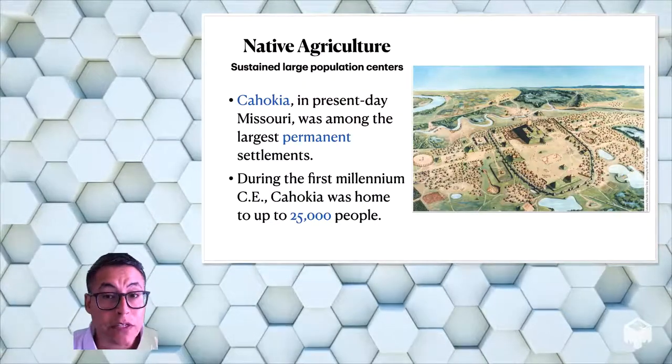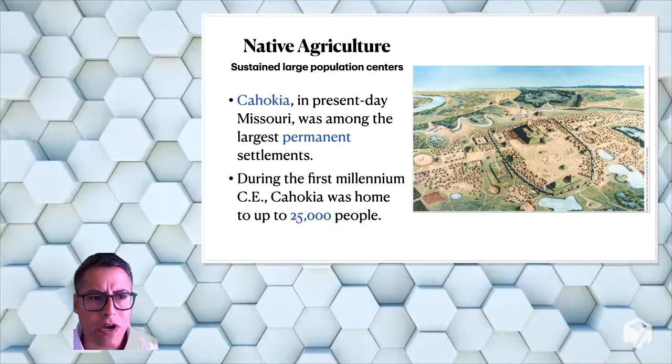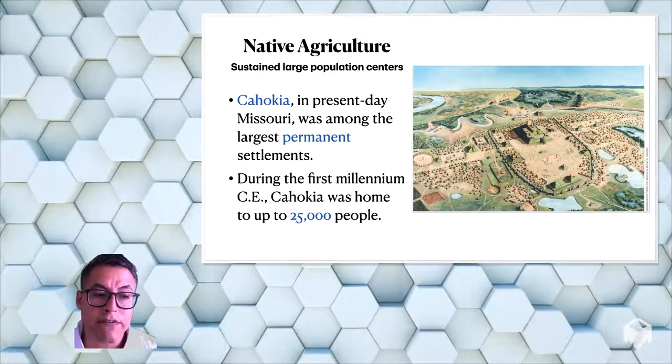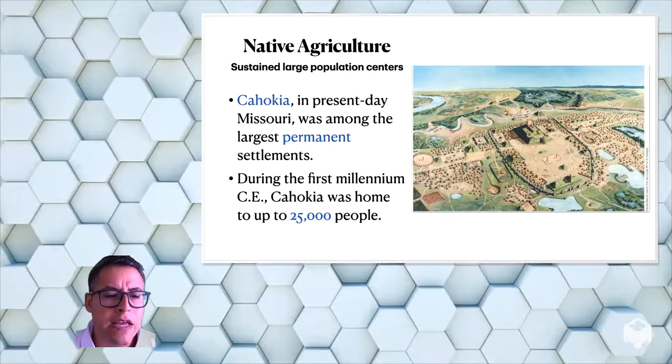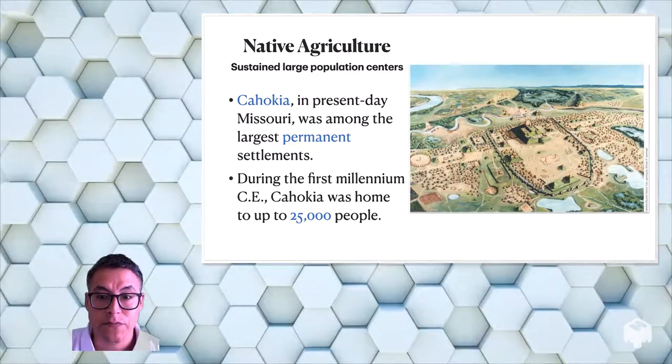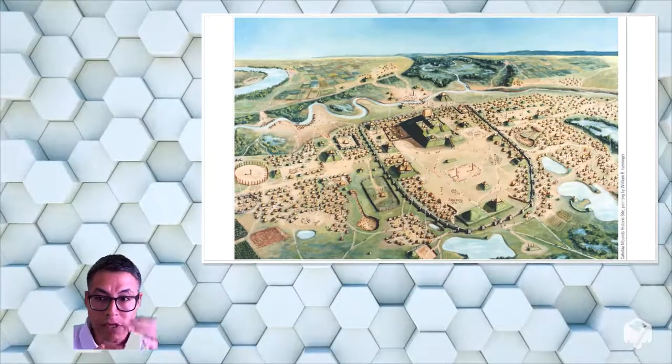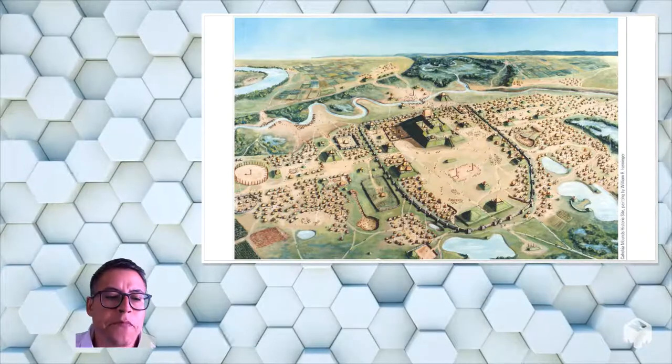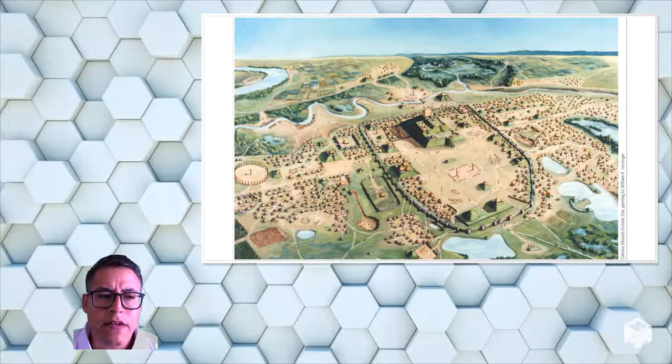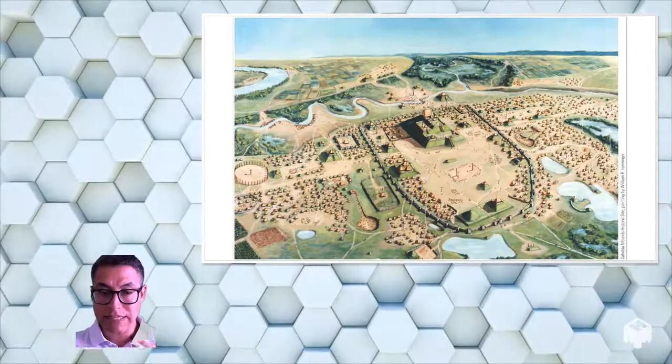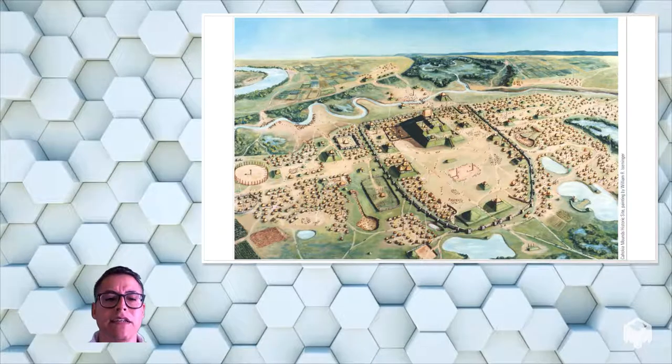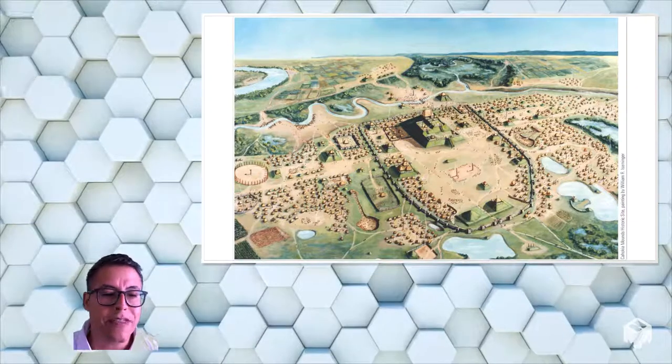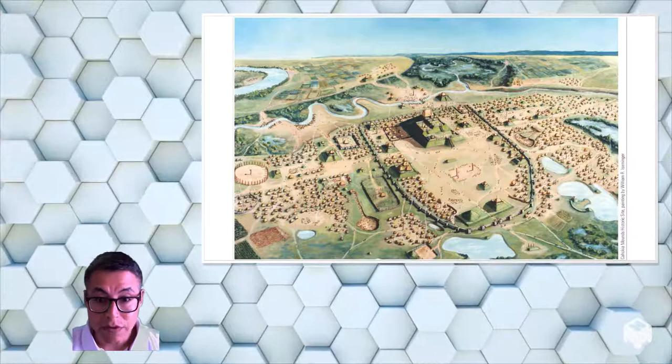Now agriculture was able to sustain large populations in the United States as well. So Cahokia, which is in present-day Missouri and Illinois, was among the largest permanent settlements in North America. And this one was established during the first millennium after Christ or during the Common Era. And Cahokia was home to about 25,000 people at the height of its civilization. They decided to establish their home there because it was at the center of these sources of fresh water. And then to have these kind of flat plains where they could grow food and where they could have their ceremonial buildings, they decided to burn down some forest.